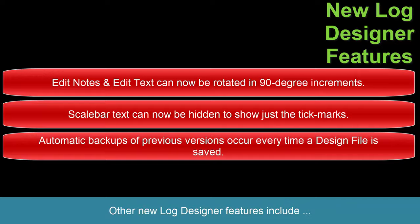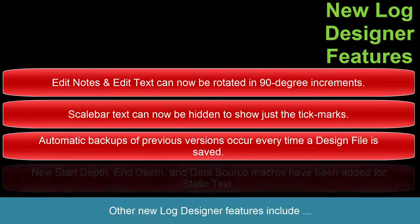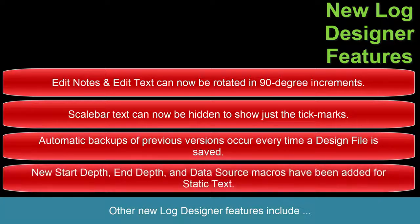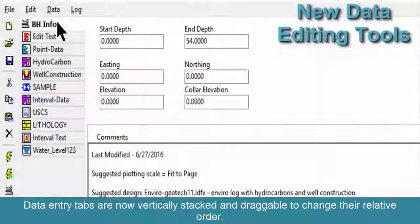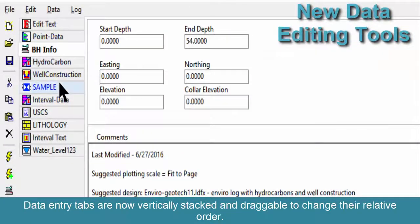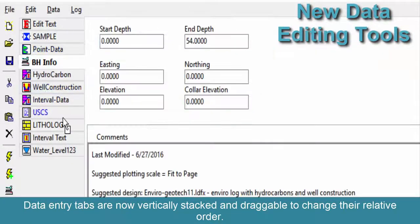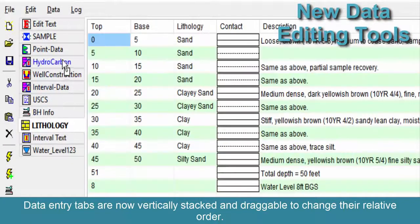Scale bar text can now be hidden to show just the tick marks. Automatic backups of previous versions occur every time a design file is saved. And new start depth, end depth, and data source macros have been added for static text.